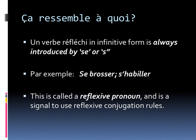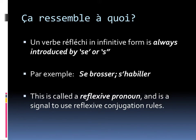Ça ressemble à quoi? What does it look like? You'll always see un verbe réfléchi in its infinitive, or no-changes form, introduced by se or s'apostrophe. Par exemple, se brosser, or s'habiller — to brush one's teeth, or to get oneself dressed. The se, ici, is called a reflexive pronoun, or pronom réfléchi.